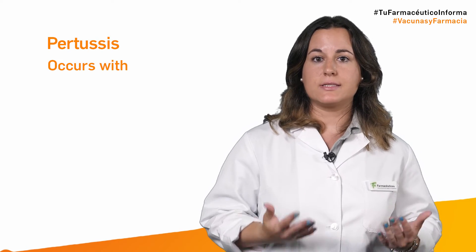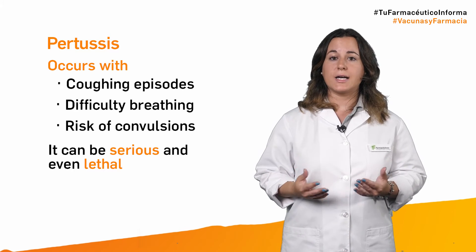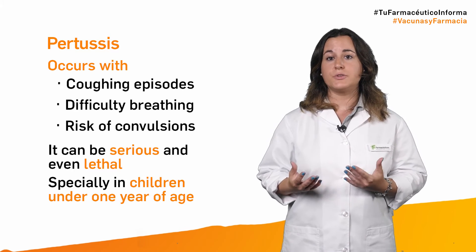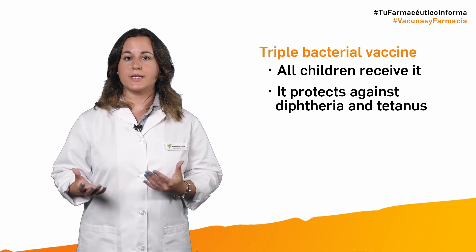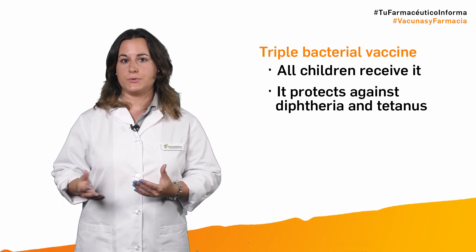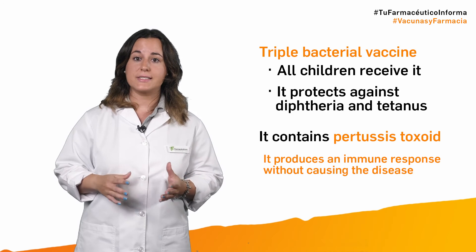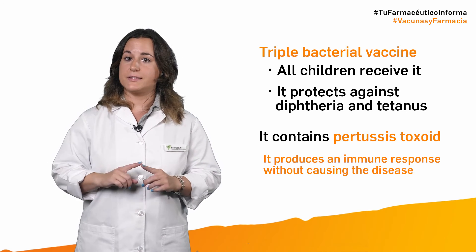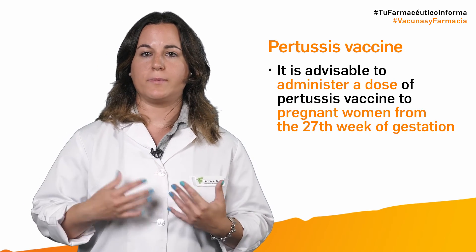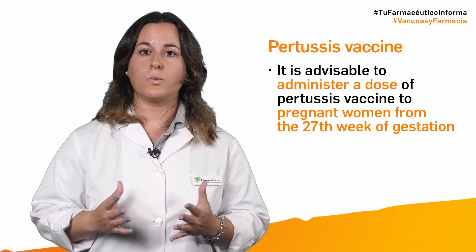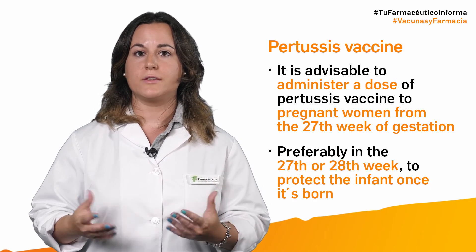Finally, pertussis is a disease that causes coughing episodes, difficulty breathing, and risk of convulsions. It can be serious and even lethal, especially in children under 1 year of age. Therefore, all children receive the triple bacterial vaccine, which also protects against diphtheria and tetanus, and contains pertussis toxoid — a modification of the toxin produced by the bacterium that activates the immune system but does not produce the disease. In the adult population, it is advisable to administer a dose of pertussis vaccine to pregnant women from 27 weeks of gestation, and preferably in weeks 27 or 28, to protect the infant once born.